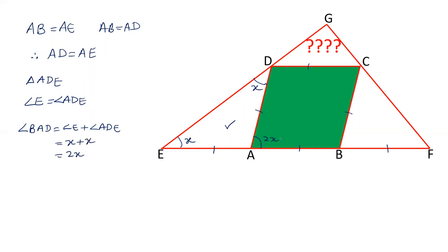So this angle is 2X. And also angle GDC equals X because DC is parallel to AB. So DC is parallel to AE and these two are corresponding angles, and therefore angle GDC is X.